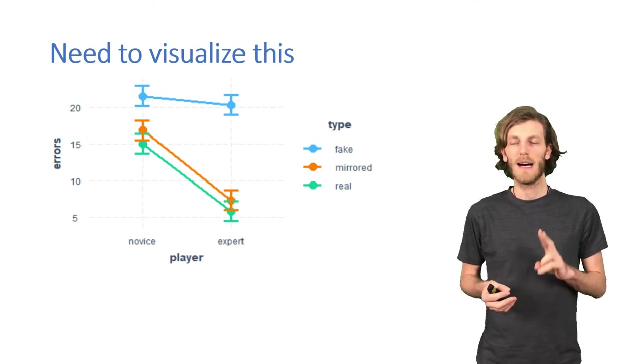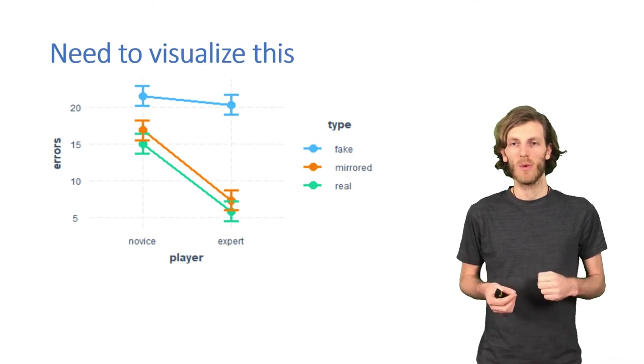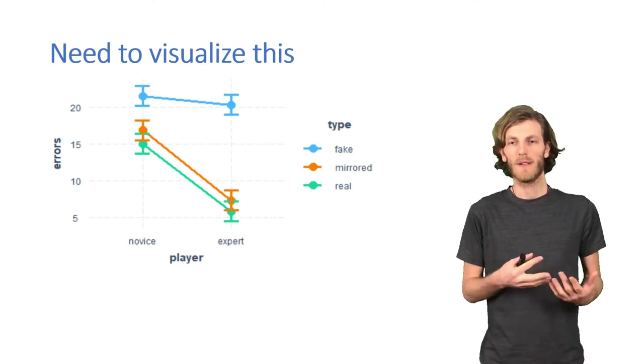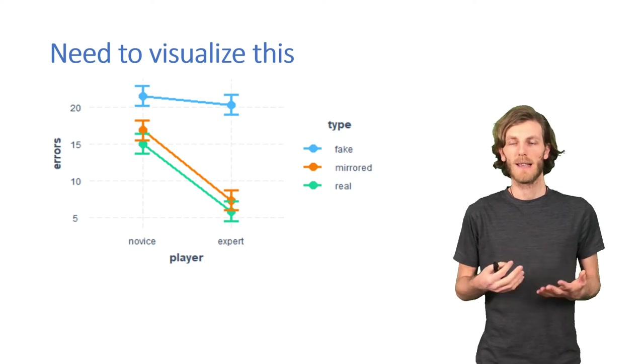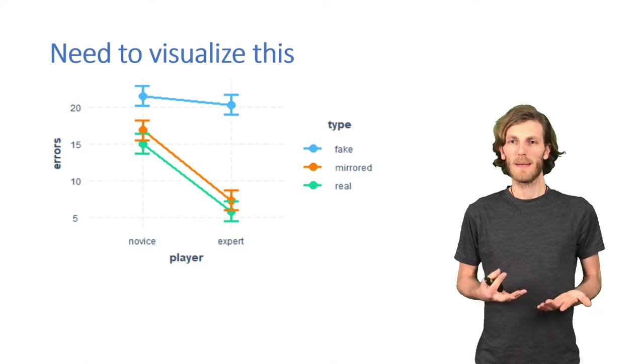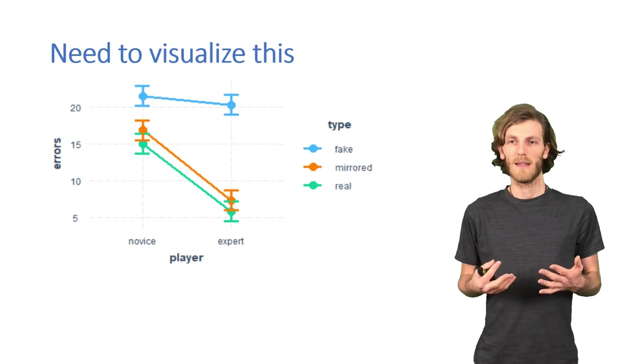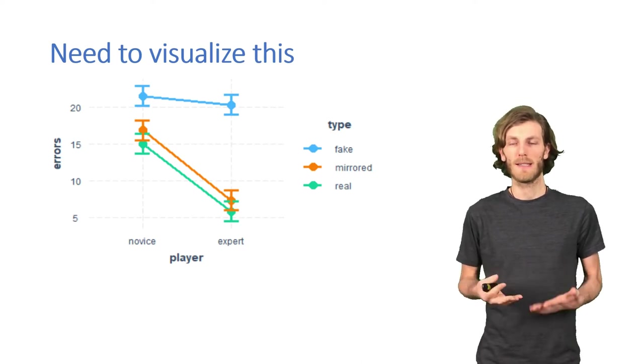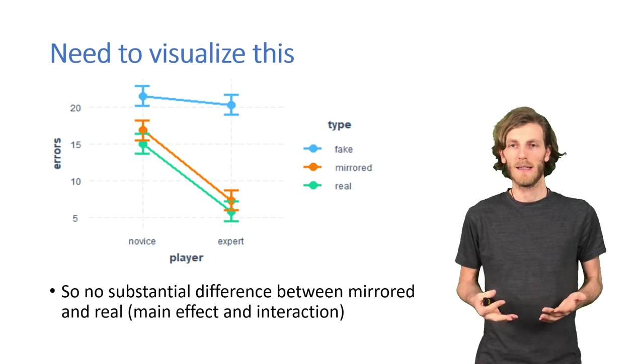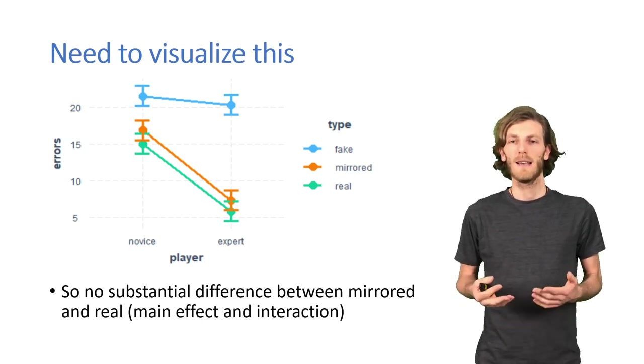So, there is no different relationship of expertise to the mirrored positions than there is to the real positions. There also doesn't seem to be a main effect. Mirrored positions seem to lead to the same number of mistakes as real positions. But that's something where we would want to be sure and actually do proper testing with the model.